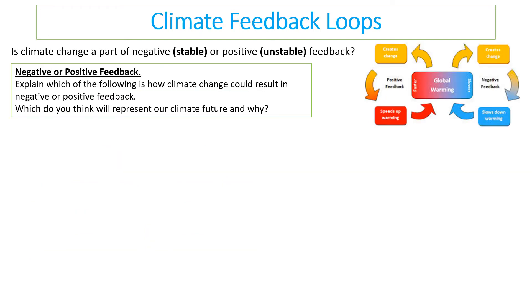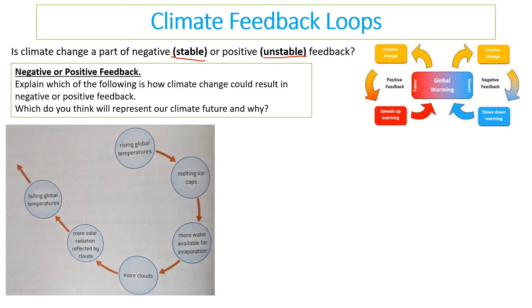Many people debate whether climate change is part of a negative feedback loop causing stable equilibrium, or a positive feedback loop causing dangerous unstable equilibrium. One argument is that the Earth — think about Gaia theory — will detect a change in temperature and use natural systems to decrease that change and return to the original temperature, suggesting we may not need to worry as much.